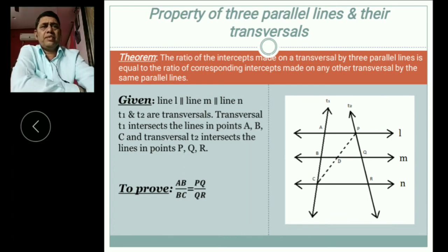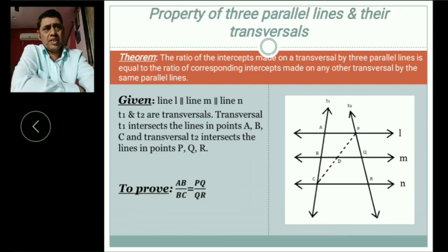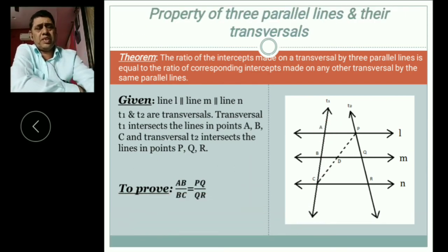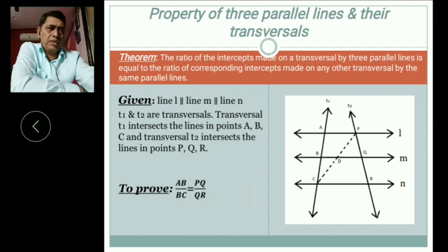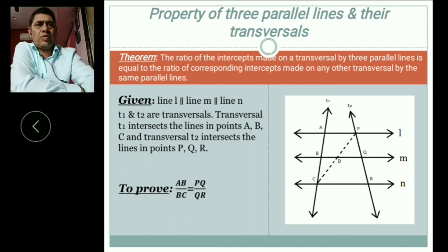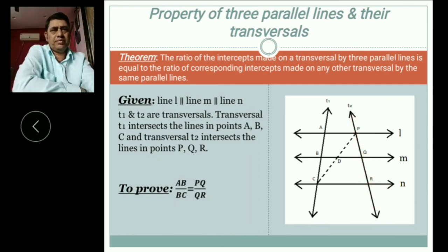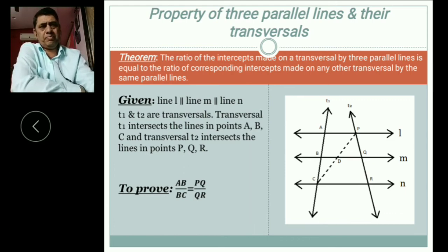Three parallel lines there. First of all we draw three parallel lines: line L, line M, and line N. Line L is parallel to line M and is parallel to line N. T1 and T2 are two transversals. And to prove: AB by BC is equal to PQ by QR.